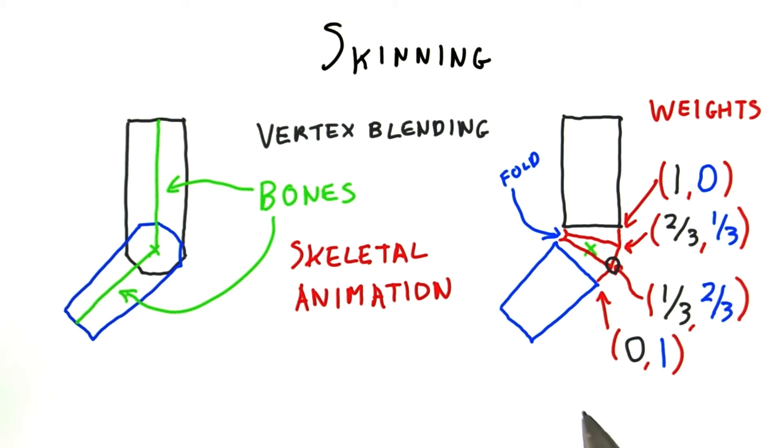In practice, a vertex can be influenced by more than two bones. The bones and weights are something the person modeling decides, and the weights always add up to one.